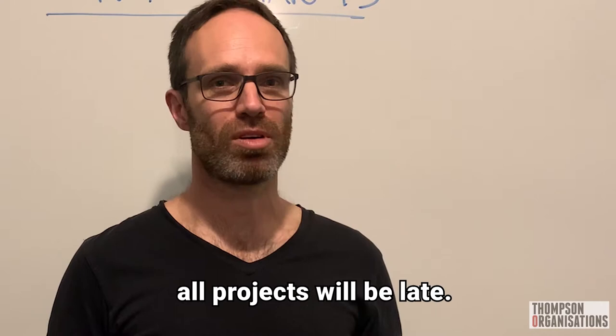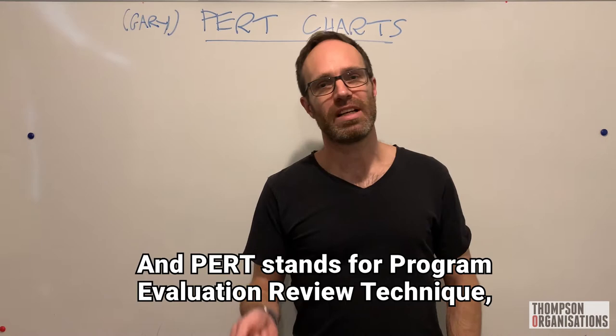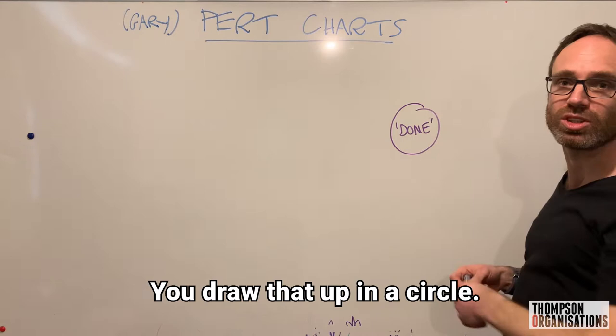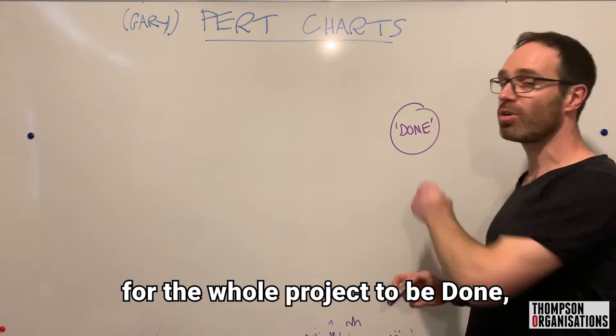It's called the PERT chart, and PERT stands for Program Evaluation Review Technique, which is pretty much the worst name you could think of for it, but the actual chart itself is really effective. Looks like this. First you have what done looks like. You draw that up in a circle. And then what you're doing is you're putting together the strands of the things that need to be done in order for the whole project to be done, which is going to end up with something that looks like this.